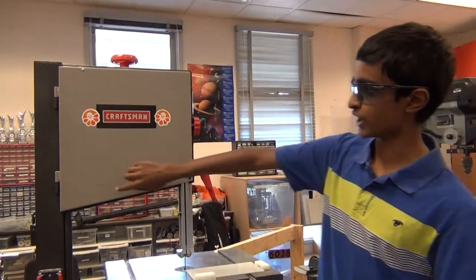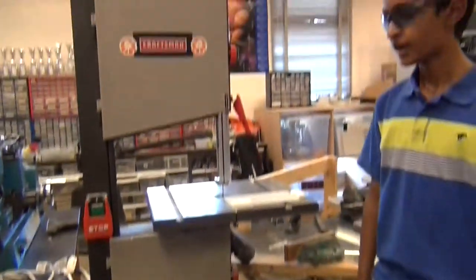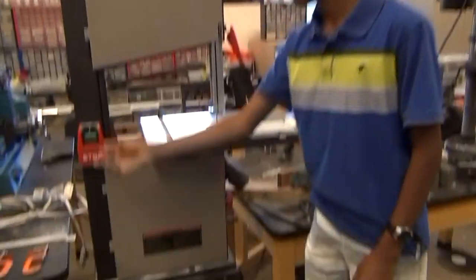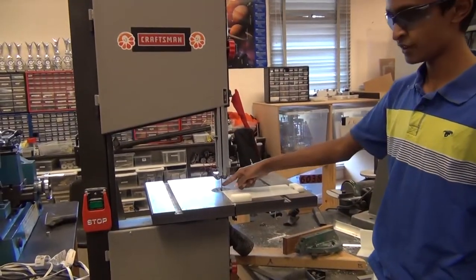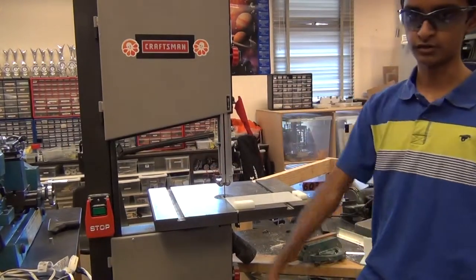So a bandsaw has two giant wheels. There's one huge wheel over here and one huge wheel under here, and there's a large band-shaped saw that goes around those two wheels and there's a motor at the back that powers the bottom wheel.